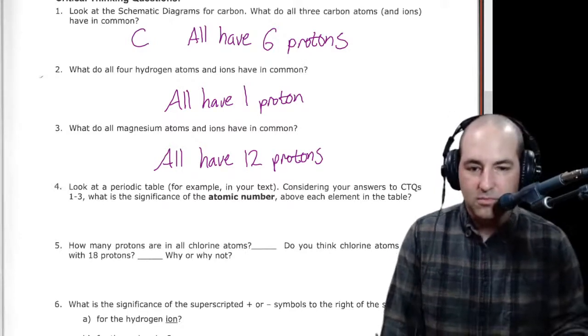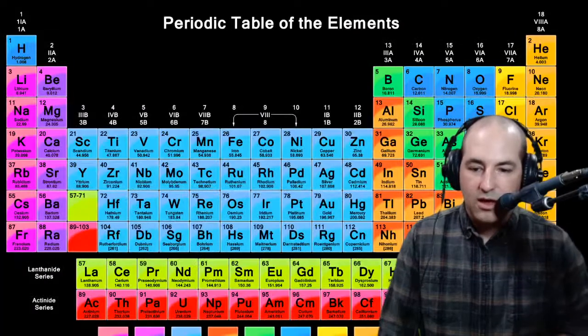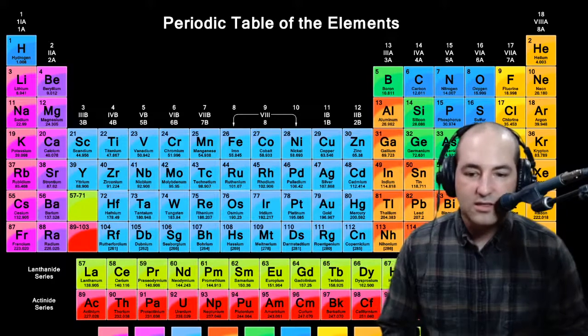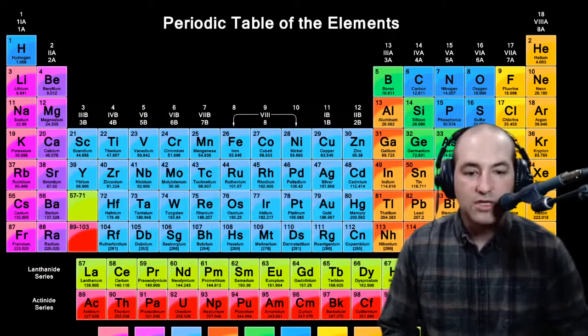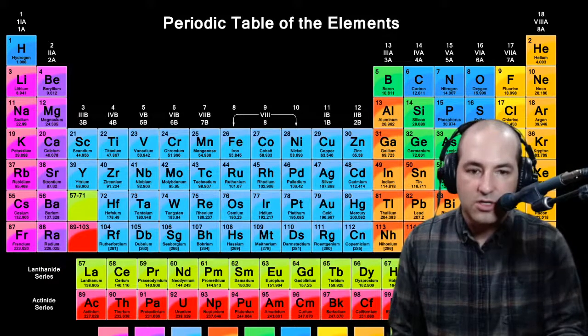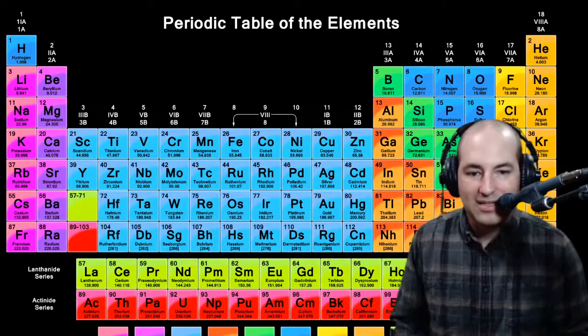Look at a periodic table. Let's do that. Considering your answers to those questions, what is the significance of the atomic number above each element in the table? So let's look at the ones we talked about, C, H, and Mg. Let's find them in the table here.